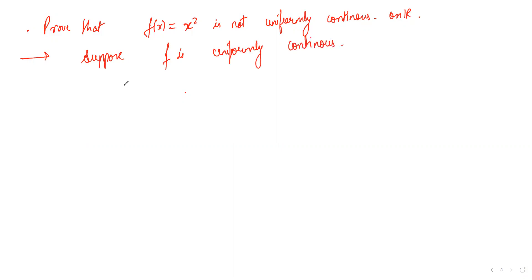What does that mean? That means given epsilon, there exists a fixed delta. So let's take epsilon equal to 1. This would imply there exists delta greater than zero such that for all x comma y with mod x minus y less than delta, f of x minus f of y is less than epsilon.